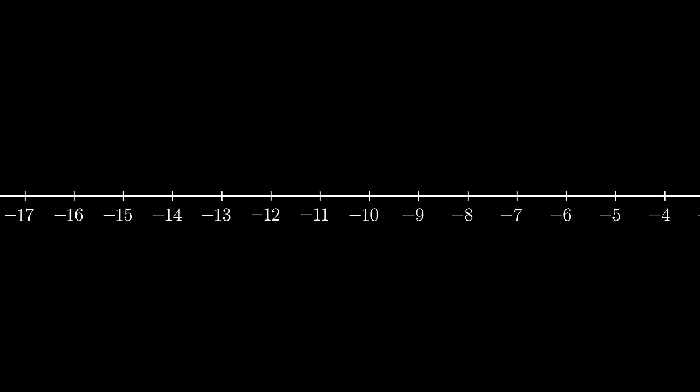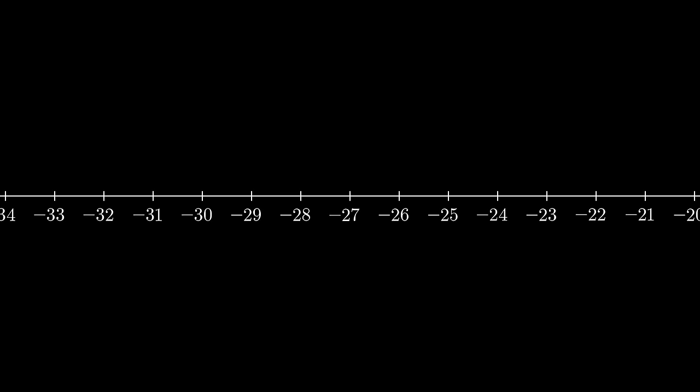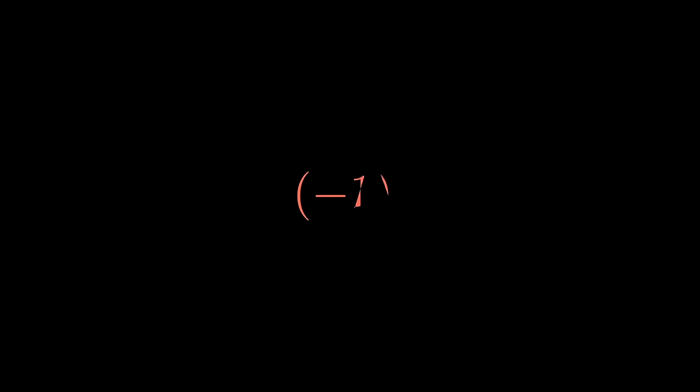You might think you know factorials. 3 factorial is 6, 10 factorial is 3,628,800, and so on. But what happens when we venture into the realm of negative numbers? What on earth could negative 1 factorial even mean?